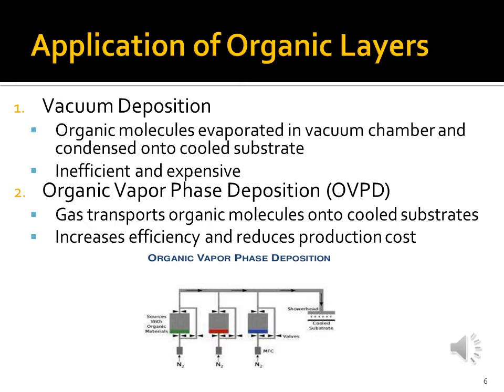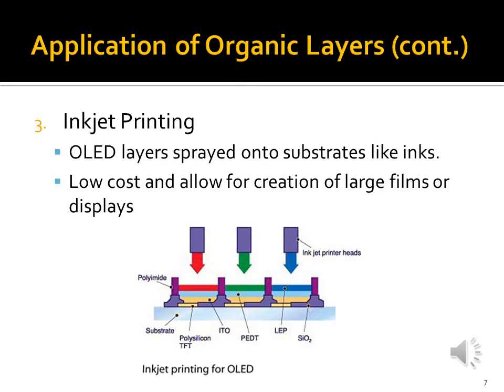The first of the preferred methods is organic vapor phase deposition, or OVPD. In this method, we use gas to transport organic molecules onto cooled substrates instead of using a vacuum, which increases the efficiency of the manufacturing process and also reduces the production cost. Finally, we have the more interesting of the three methods: inkjet printing. You can actually spray the organic material onto the substrate like ink on paper during the printing process with an inkjet printer. This is probably one of the better and more commonly used methods in industry to create organic light-emitting diodes, and the main advantage is low cost with the ability to create large films or displays.